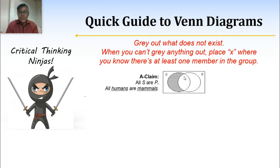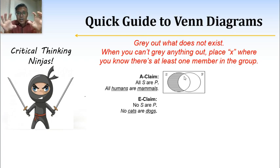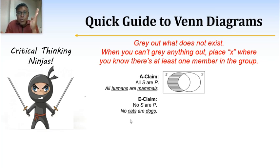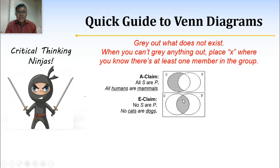Let's look at an E claim: no cats are dogs. Our two categories are cats and dogs — draw them as overlapping circles. When we say no cats are dogs, there are no cats that are also dogs at the same time. So we gray out the overlapping section, because we know that does not exist. Now for the second instruction: when we can't gray anything out — if the claim does not exclude anything — we place an X where we know there's at least one member in the group.